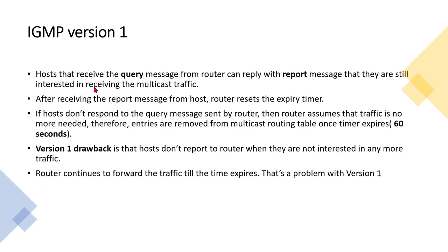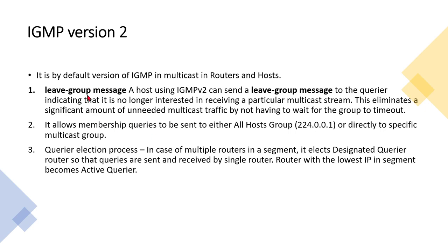Hosts that receive the query message from the router can reply with a report message confirming they are still interested. The issue comes when they are not interested — they don't tell the router. After receiving a report from the host, the router resets the expiry timer. If hosts don't respond to query messages, the timer completes and traffic stops. The drawback of version one is that hosts don't send a leave message when they are no longer interested, so the router continues to forward traffic until the timer expires.